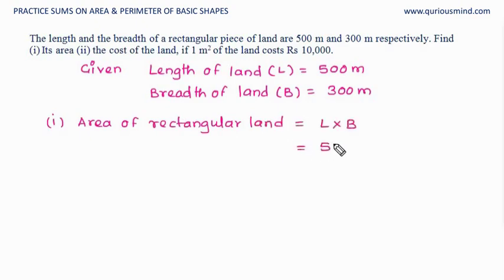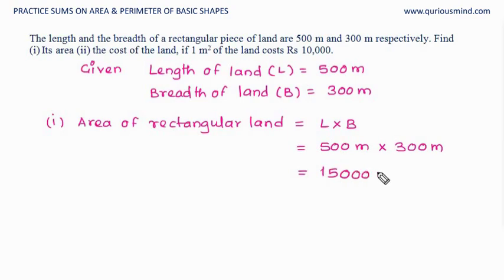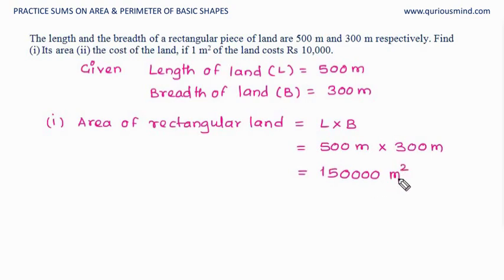Replacing the values: 500 multiplied by 300 gives us 150,000. The units also get multiplied to give us meter square, and we know area is always written in unit squares. So the area is 150,000 meters square.